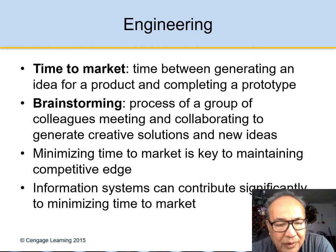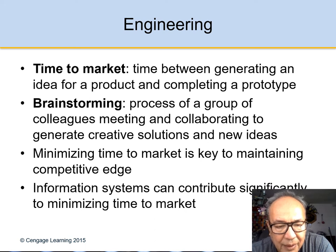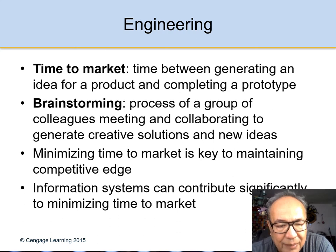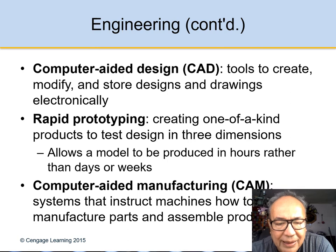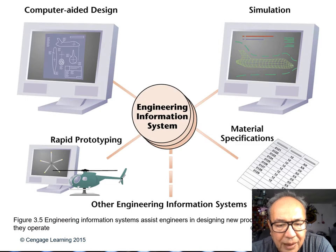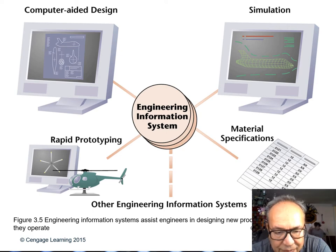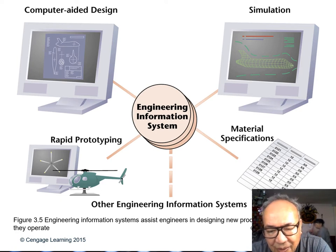Engineering — how do you make the product? There are tools used in engineering such as time to market, brainstorming, computer-aided design, and rapid prototyping. This is a picture of an engineering information system.